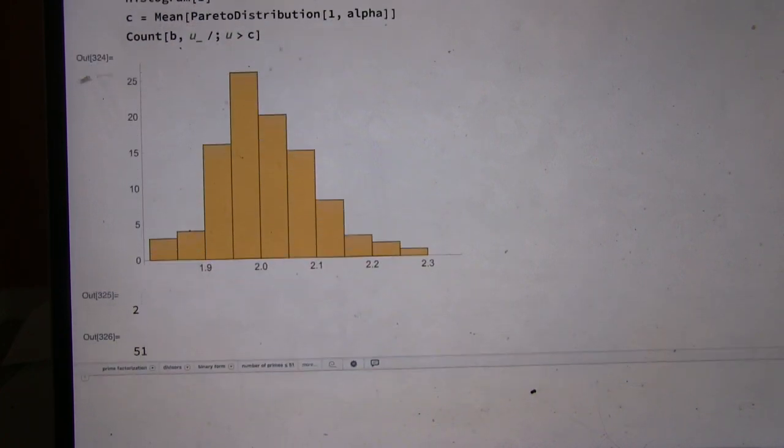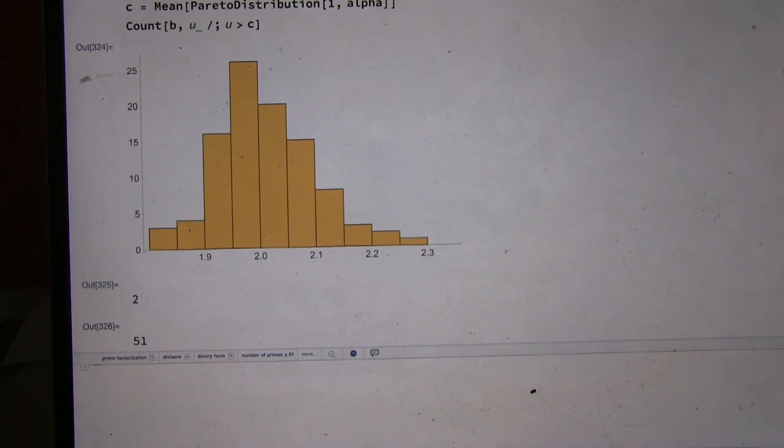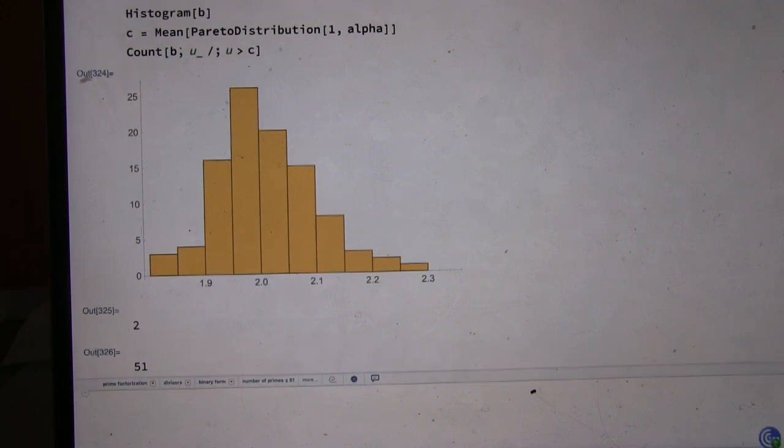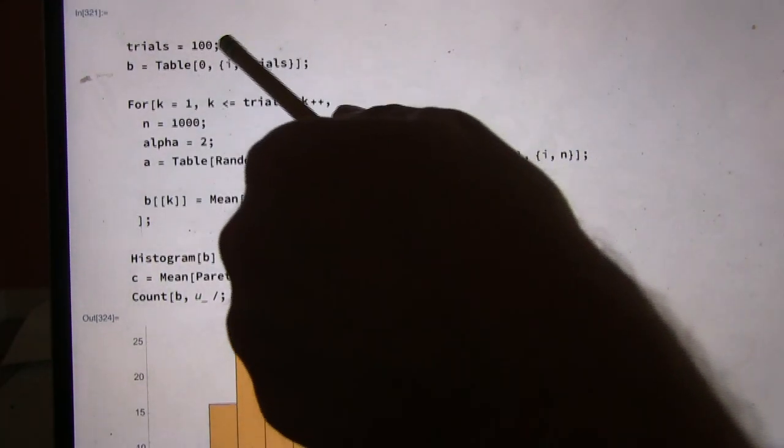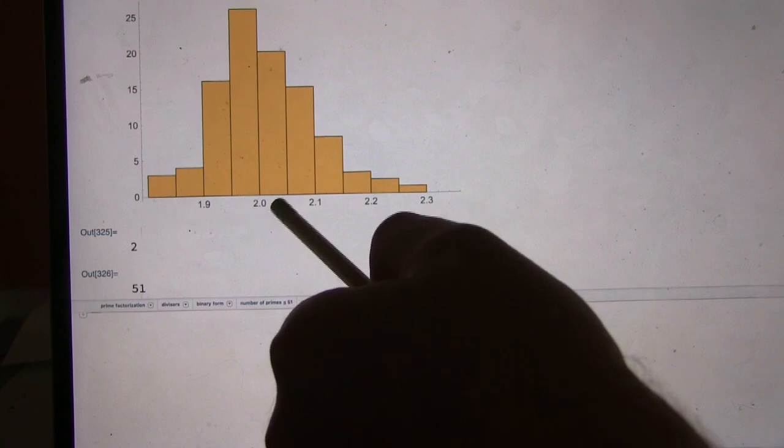51 is how often our sample mean out of our, how many trials did we do here? A hundred. A hundred trials.